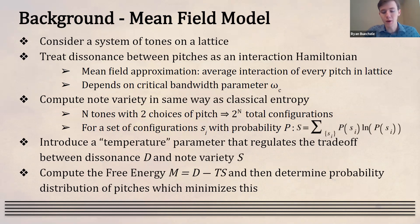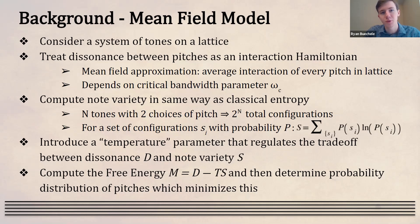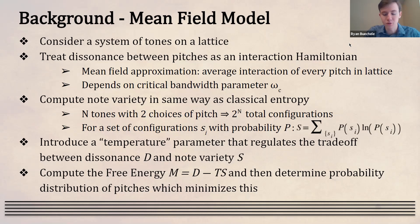Professor Berezovsky used a mean field model to solve for pitches on a lattice of interacting tones, treating dissonance between pitches as an interaction Hamiltonian and using the mean field approximation — taking an average interaction over every pitch on the lattice. This dissonance depends on a critical bandwidth parameter ω_C. Note variety is computed like classical entropy — for a melody of N notes with two pitch choices, you'd have 2^N configurations. A temperature parameter regulates the trade-off between minimizing dissonance and maximizing note variety, and a probability distribution is calculated to minimize this free energy.